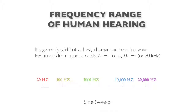Let's hear what this sounds like — we're going to have a sweep between 20 and 20,000 cycles. I hope you're listening on headphones and not on your laptop speakers, because you're not going to hear the low frequencies very well on laptop speakers. That represents the range of human hearing — it wasn't scaled perfectly, but close enough.